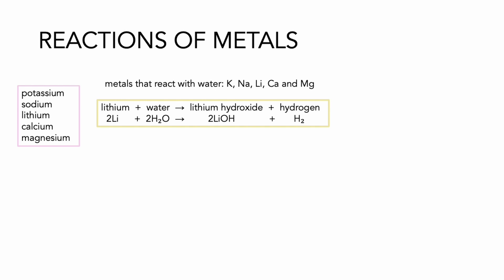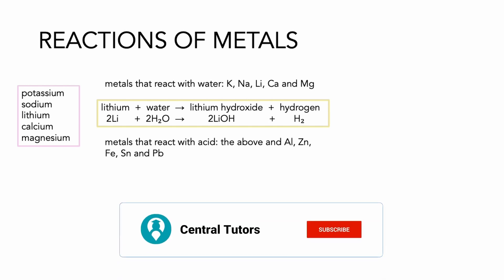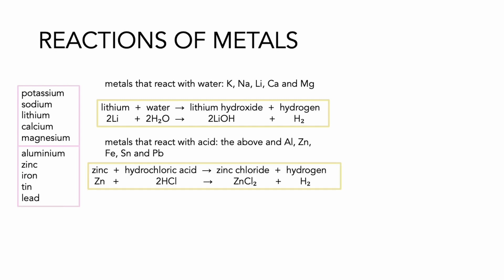The metals that react with an acid are the above metals and aluminum, zinc, iron, tin, and lead. These metals here don't react with water but can react with dilute acid, so this means they have a lower reactivity than the metals in this first box.